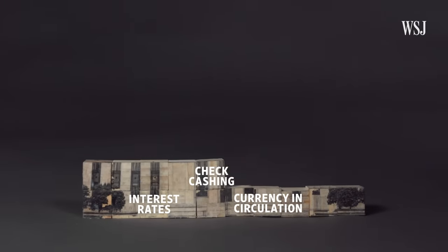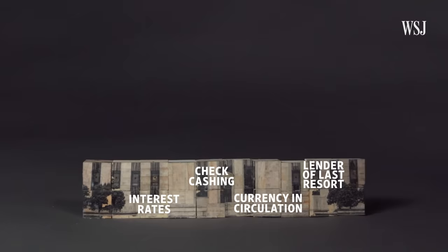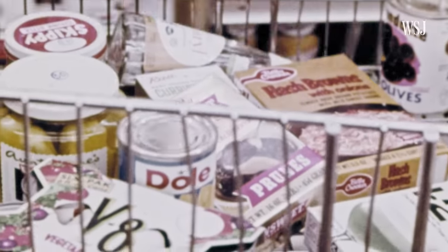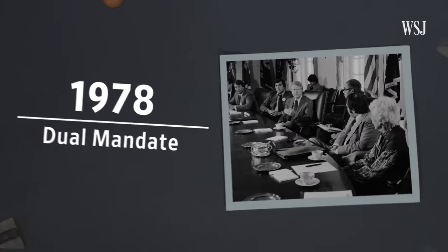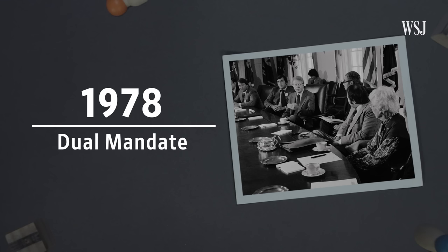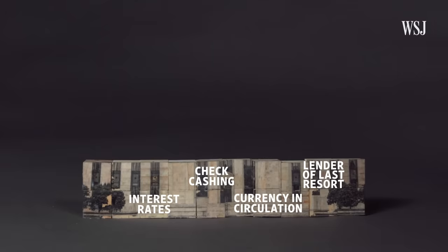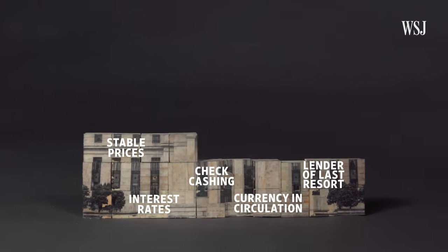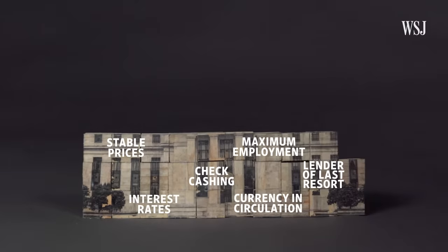But the Fed as we know it today, with its many responsibilities, was built from responses to even more financial crises. Let's start with inflation in the 70s. In 1978, Congress gave the Fed — or really the FOMC — two main priorities. The Fed was given a dual mandate to focus on stable prices and maximum employment. Sometimes those goals conflict with each other. When you're trying to crush inflation, sometimes you're going to do things that cause unemployment to go up.